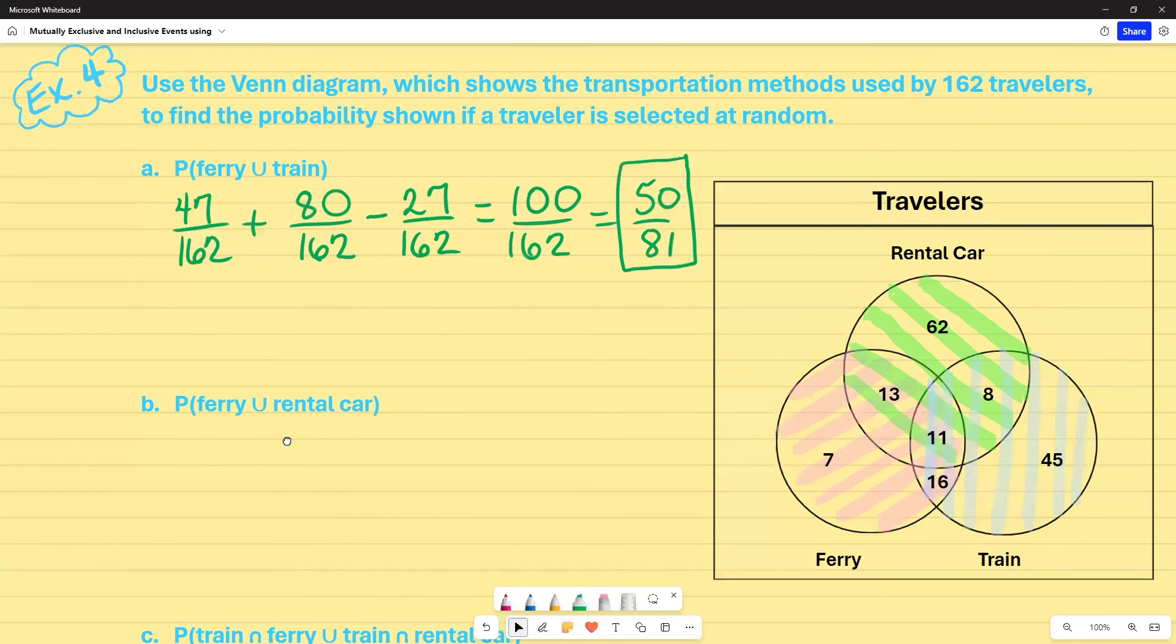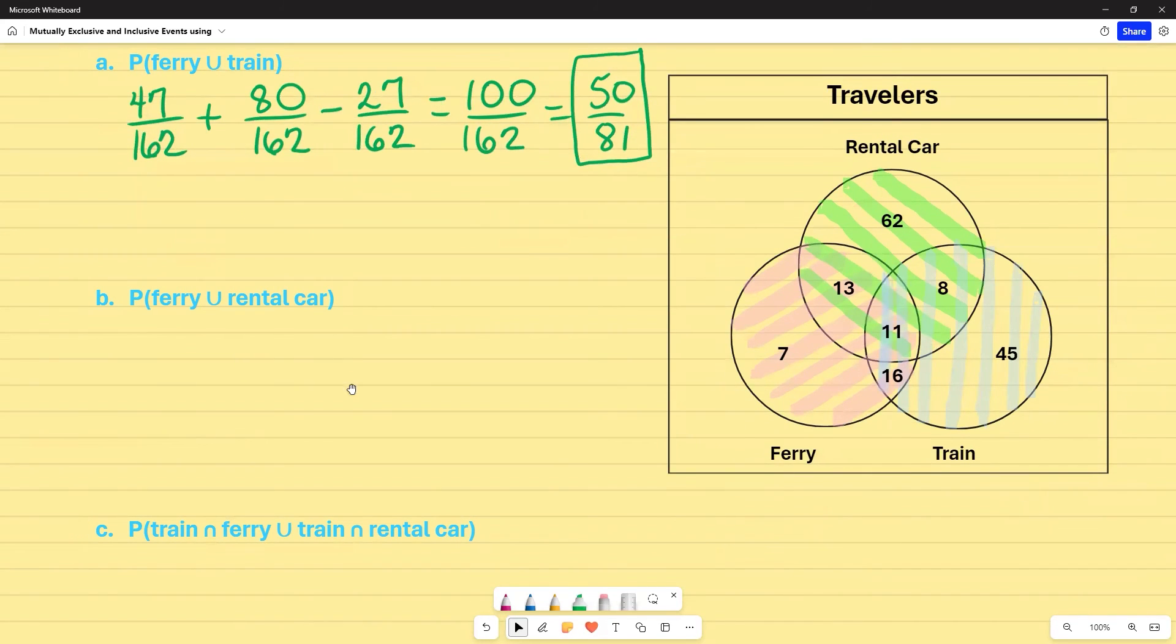For the next one, I have a ferry or rental car. So I already know the ferry because it's going to be the same thing. That's going to be 47 out of 162. I see the or for union and then rental car. This time I look at the green circle and I count all of the numbers that are in it. And when I do that, that's going to give me 94 out of that same 162. I noticed there's an overlap between the ferry and the rental car right here. So where the pink and the green meet, that's going to be 13 plus 11. So I'm going to subtract 24 out of here. And once I simplify, that's 13 out of 18.